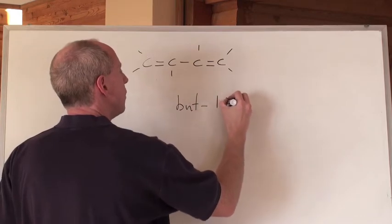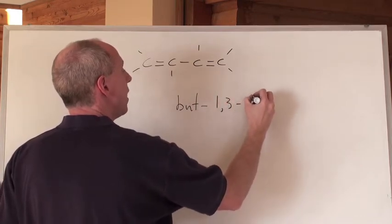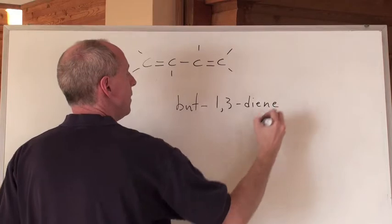So, what would you call it? Butte, one comma three, hyphen, die, because there's two eens.